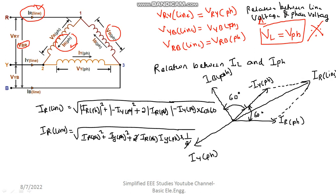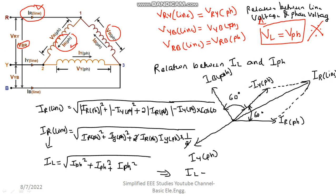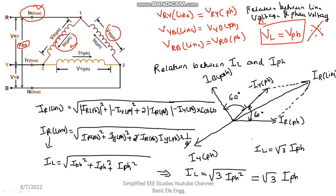Instead of I_R phase and I_Y phase, I will write I_phase only. So I_L = √(I_phase² + I_phase² + I_phase²) = √(3 × I_phase²). Therefore I_L = √3 × I_phase. In conclusion, the line current will be equal to √3 times the phase current. Likewise, you can draw for the other phases as well, but this derivation is sufficient.